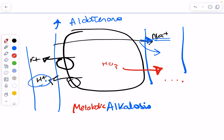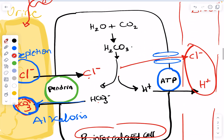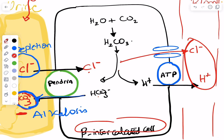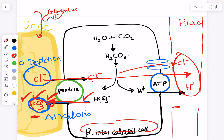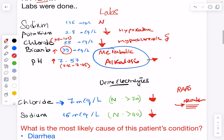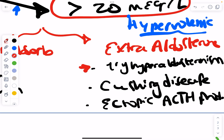When there is so much bicarbonate in plasma in this setting, the beta intercalated cell chloride-bicarbonate exchanger works harder than normal to try to excrete this bicarbonate into urine. As a result, more chloride gets reabsorbed into the blood, more is filtered out into urine — resulting in a hyperchloremic state with high urine chloride. This is why states of hyperaldosteronism are characterized by high urine chloride.